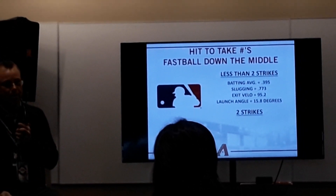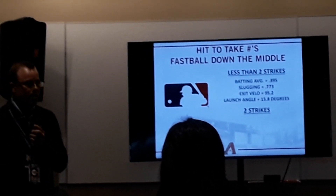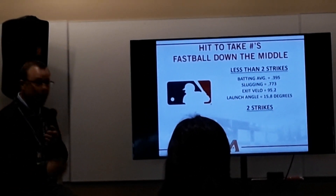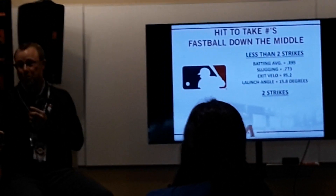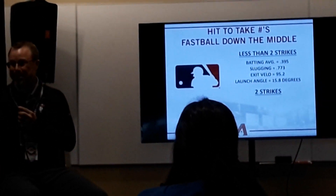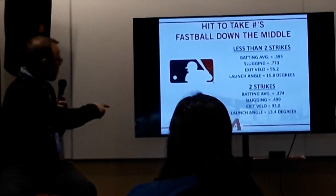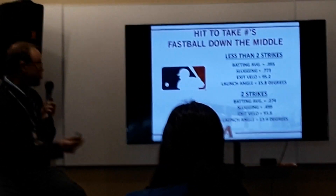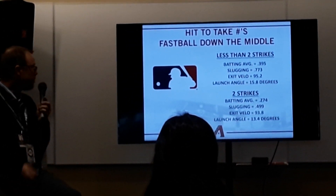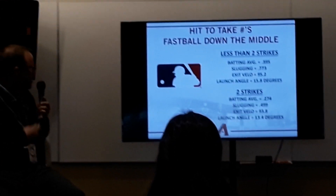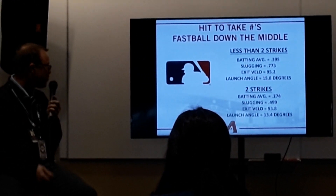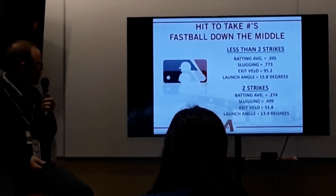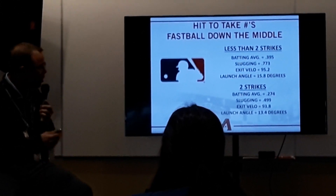With two strikes on that hitter — fastball down the middle, meaning probably the pitcher didn't make a mistake — batting average is .274, slugging .499, exit velocity really close at 93.8, launch angle 13.4.